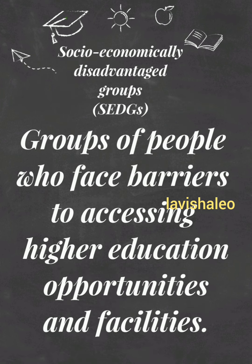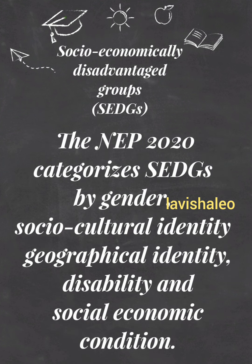Socio-economically disadvantaged groups are groups of people who face barriers to accessing higher education opportunities and facilities. NEP 2020 categorizes SEDGs by gender, socio-cultural identity, geographical identity, disability, and socio-economic condition. These are the factors because of which certain groups of people face barriers to accessing education.